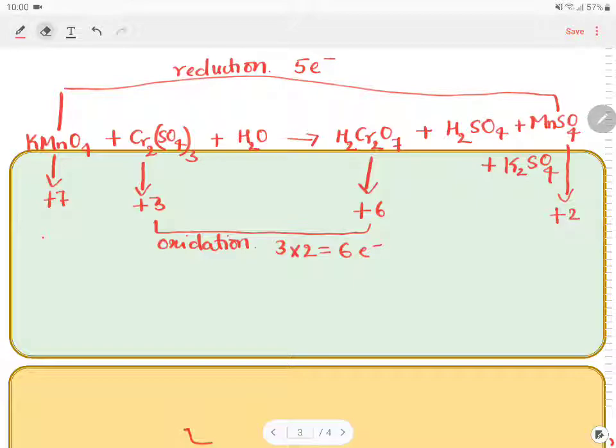Wherever chromium is there, you multiply by 5. And wherever Mn is there, you need to multiply by 6. Therefore, multiply this with 5 and this with 6. So that both the sides, the number of electron becomes equal.